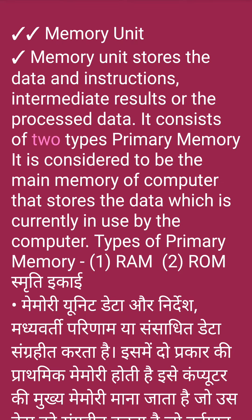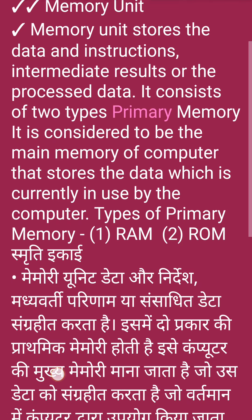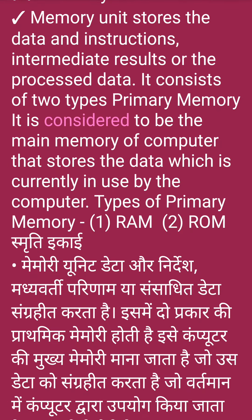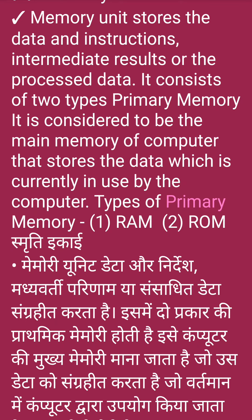It consists of two types. Primary memory — it is considered to be the main memory of the computer that stores the data which is currently in use by the computer. Types of primary memory: 1. RAM, 2. ROM.